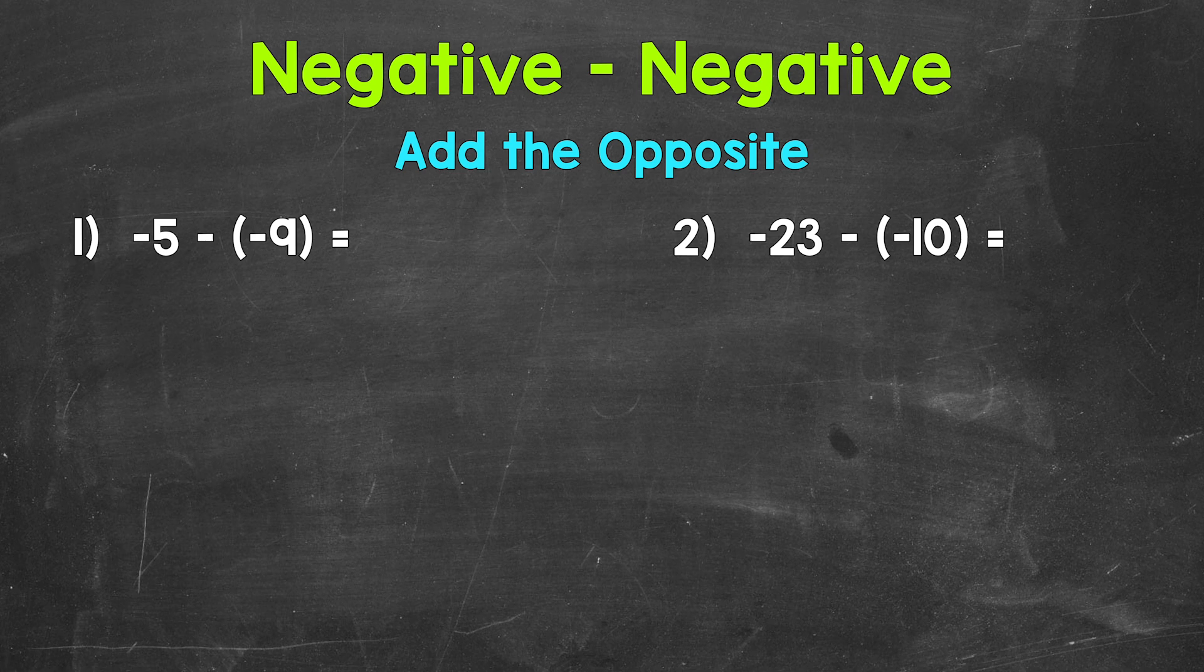And then we take the opposite of the number we are subtracting. So this gives us an equivalent problem and we are able to use this strategy. So we have negative five minus negative nine here. Let's rewrite the problem adding the opposite.